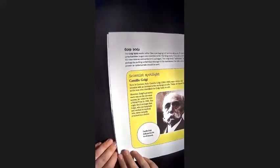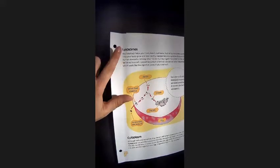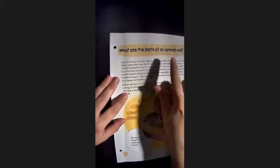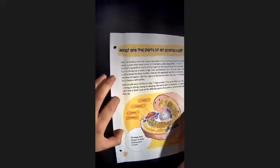mitochondria, ribosomes, Golgi body, lysosomes, cytoplasm. Those are all going to be those parts of the animal cell that we learn about today.